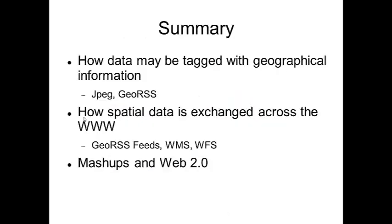Just to finish off — what have we seen? We've seen how to geotag various data with geographical information — JPEGs, GeoRSS feeds, and so on. We've seen how spatial data is exchanged across the World Wide Web through GeoRSS feeds, web map services, and web feature services. We've had a brief look at mashups and the Web 2.0 context. The technology is basically the same as for the normal web — data exchanged in XML or GeoJSON, with spatial APIs as opposed to aspatial APIs — just with some additional software to deal with the spatial side.